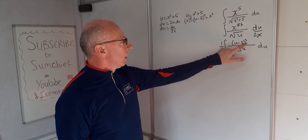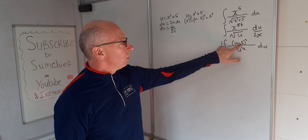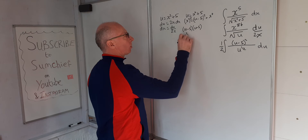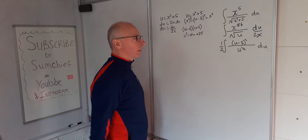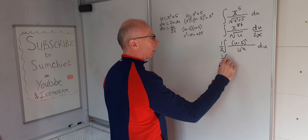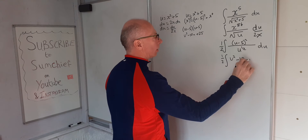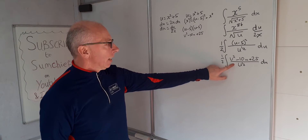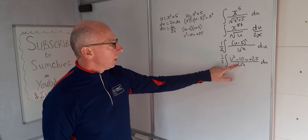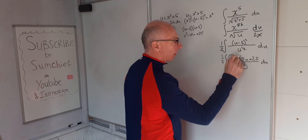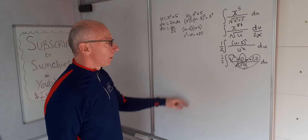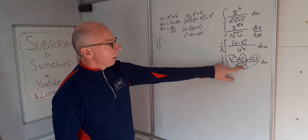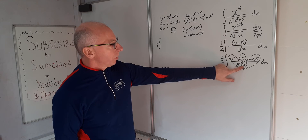Next we expand (u minus 5) squared, which gives us u squared minus 10u plus 25. We can now split this up into three separate integrals. The first integral involves u squared over u to the half, which gives us u to the three over two.